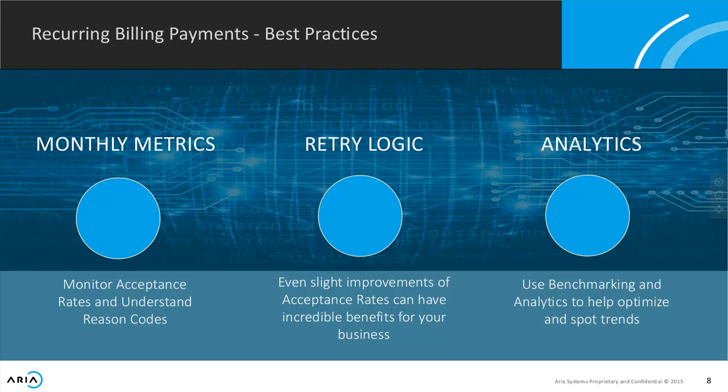What are some of the things you should be looking at for best practices? Number one, you need to know your monthly metrics — monitoring your acceptance rates and understanding the reason codes coming back from cards on file. Some of our merchants at ARIA actually have weekly meetings to look at these metrics. At those weekly meetings they look at the metrics, see how they're changing, then decide on an action plan to address the issues they're seeing. They're looking for patterns and trends.